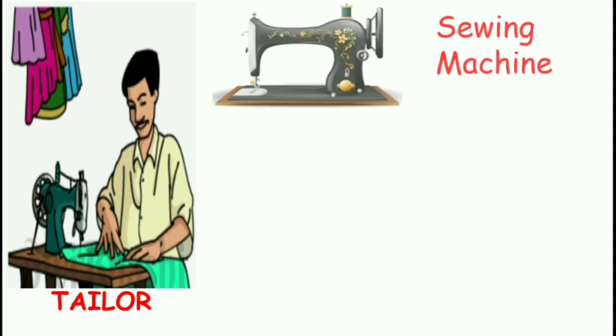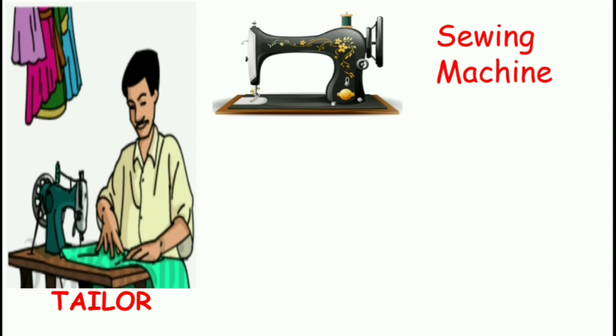Once we have bought the material we want, we go to the tailor. Here you can see a tailor who stitches the clothes for us. Now let's see what things a tailor uses. As you can see, he is sitting at a sewing machine — a sewing machine is a very important tool for every tailor, and a tailor needs it to stitch.